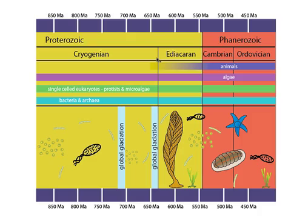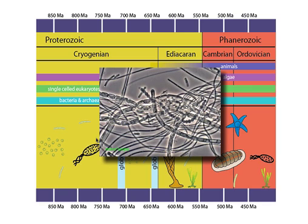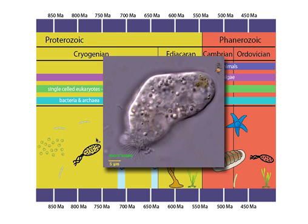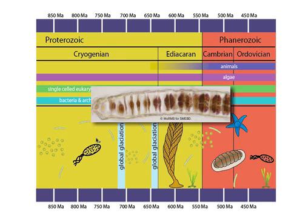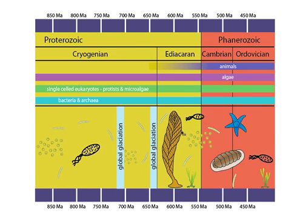The division between the Cryogenian and the Ediacaran is the end of the last Snowball Earth glacial event, here. Before the Ediacaran, most of the life in the oceans was microscopic — bacteria and protists and small single-celled algae. During the Ediacaran, the fossil record shows us the first pieces of evidence for complex, multicellular life.